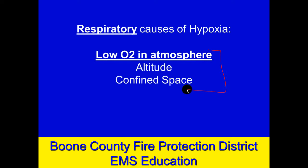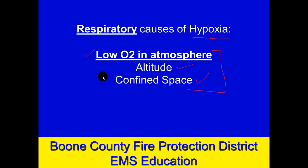Moving to respiratory causes: one very simple cause of low oxygen delivery to the tissues would be low incoming oxygen to the lungs. If the lungs are intact, the cardiovascular system is intact, the neurological system is intact, but you're simply breathing in air that's low in oxygen, then there's going to be a low amount of oxygen delivered to the tissues, causing hypoxia. Where do you find that? At altitude, or in confined spaces that are not appropriately ventilated. Very uncommon, but worth noting in a comprehensive look at hypoxia causes.